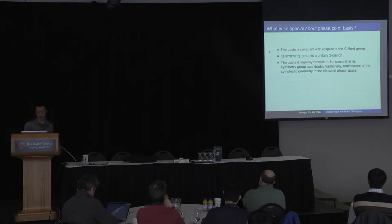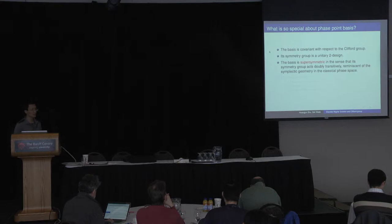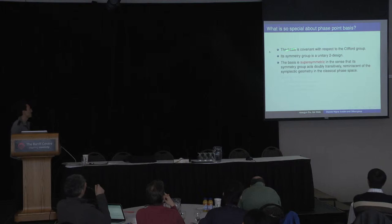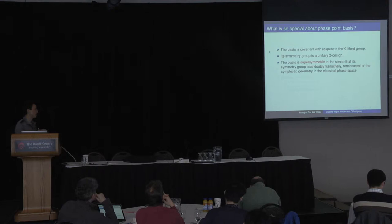What's so special about this discrete Wigner function and the phase point basis? One thing very easy to verify is that it is covariant with respect to the Clifford group. And because the Clifford group is a unitary 2-design, it means that the symmetry group is a unitary 2-design. I also use this concept called supersymmetric — a kind of permutation symmetry that can map any pair of phase operators to another pair.